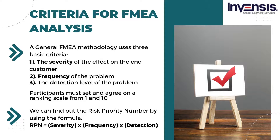Many issues can be ranked accordingly based on how easy it is to detect problems and take constructive action to prevent failure. Participants must set and agree on a ranking scale from 1 to 10, where 1 means very low and 10 means very high, on the criteria of severity, frequency, and detection. This must be done for each of the failure modes identified. Although FMEA is a qualitative process, it's important to use data to stack and qualify the decisions the team makes regarding the ratings they offer.